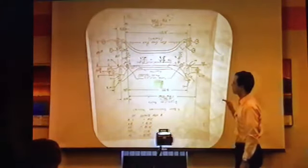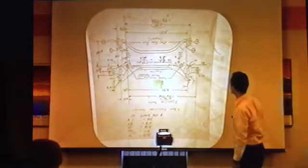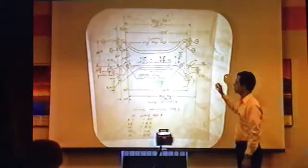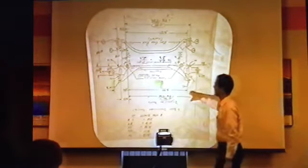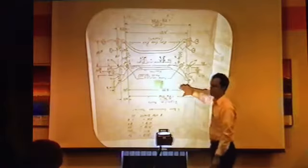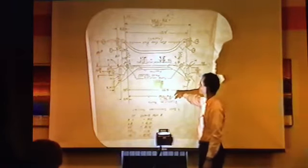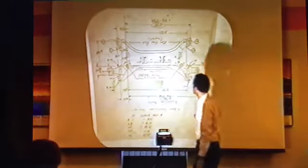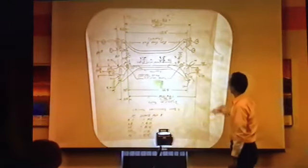This is the datums for the CMM data. The artist rendition that Jay was talking about would be possibly these numbers in the sense that these are the numbers that the coordinate measuring machine will give you for these different locations.